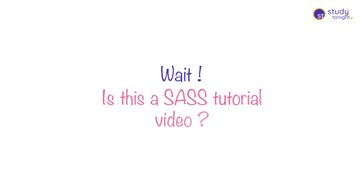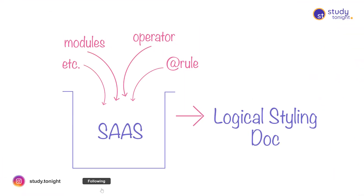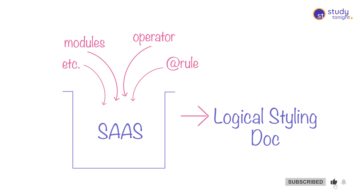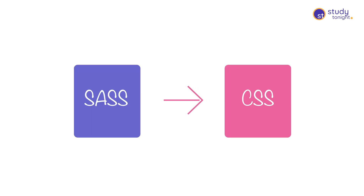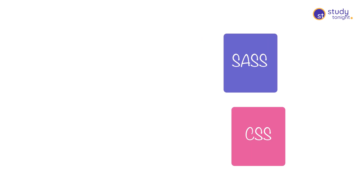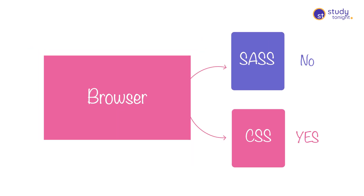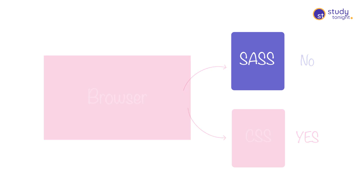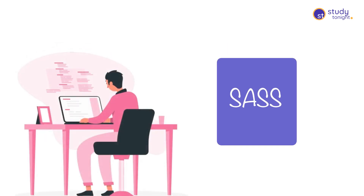This video is not about learning SAS but just to give you an understanding of what SAS can do and why it is used. Using all this, you can create a logical styling document where you have variables, functions, operators, and built-in modules like color and math which are available in SAS. When you are done, you can compile your SAS code and convert it into CSS — because browsers only understand CSS. So SAS is just for development's sake, to help front-end developers write scalable styling code which is then converted into CSS.